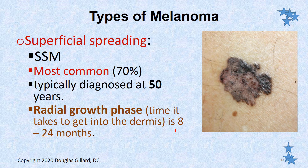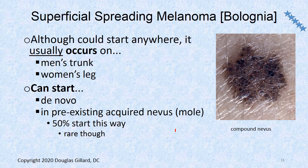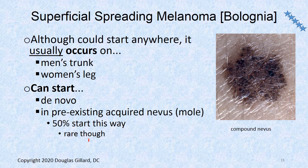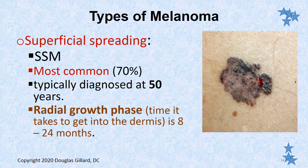The radial growth phase is 8 to 24 months. Although it can start anywhere, it usually begins in sun-exposed regions — the trunk in men, the back of the legs in women. It can evolve from a mole — about 50 percent start this way, though moles very rarely become cancers — or it can start de novo, beginning as a flat macule that spreads and grows, eventually becoming nodular.